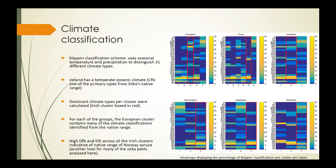Dominant climate types per cluster in each group were calculated and displayed here in heat maps for each of the groups. The climate types are on the y-axis and the cluster numbers are on the x-axis, and the cluster that contains Ireland is boxed in red. Each legend indicates percentages being shown for each climate type. For each of the groups, the European cluster contains many of the climate classifications originally identified from the native range.